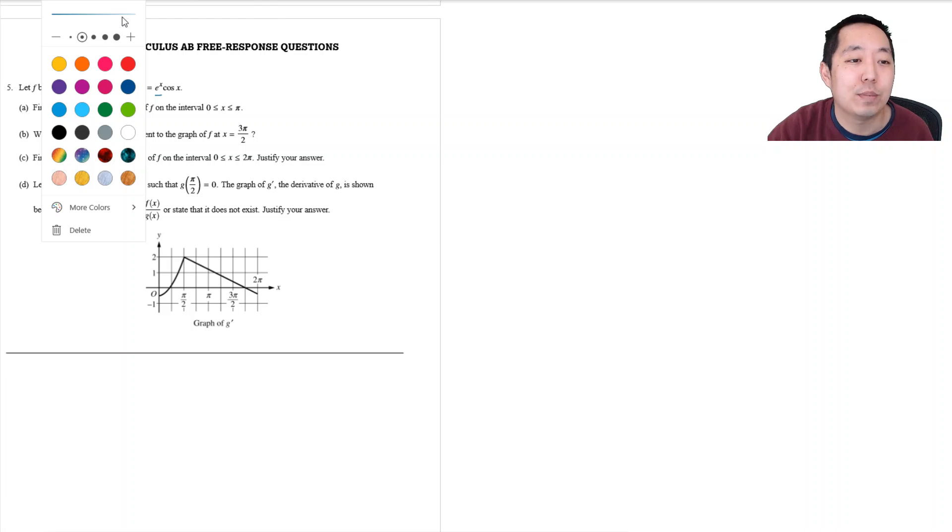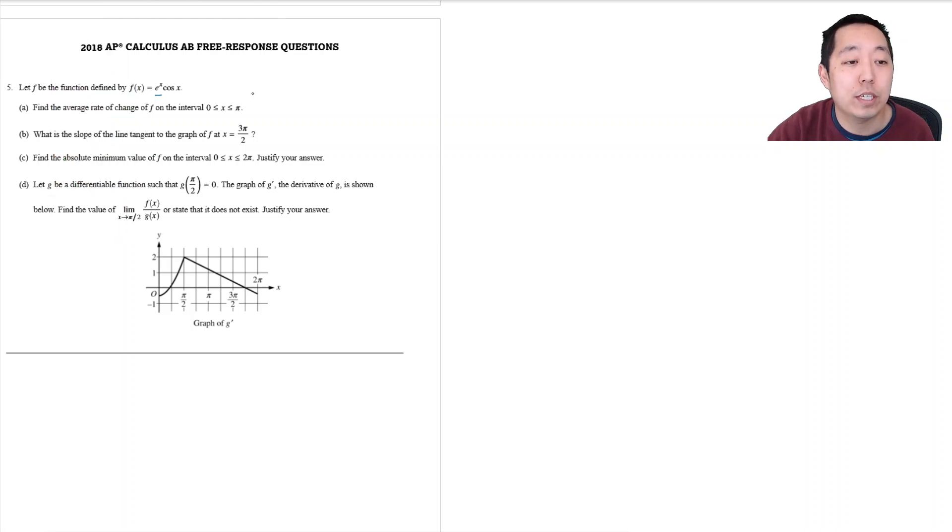Hi all, this is Alan with Bothell STEM Coach and today we are going to be looking at the 2018 AP Calculus AB free response questions, looking at number five here. So I have this function here, f be defined as e to the x cosine x average rate of change of f on this interval. I always kind of start off with a little bit of a sketch to get an idea of what I think this function should look like.